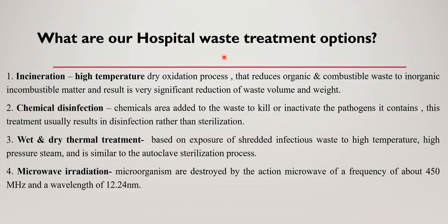What are the different options for treatment of hospital waste? First is incineration — it is a high-temperature oxidation process. Second is chemical disinfection: chemicals are added to the waste to kill or inactivate the pathogens it contains. Third is wet and dry thermal treatment, based on exposure of the shredded infectious waste to high temperature and high pressure steam, or microwave radiation.